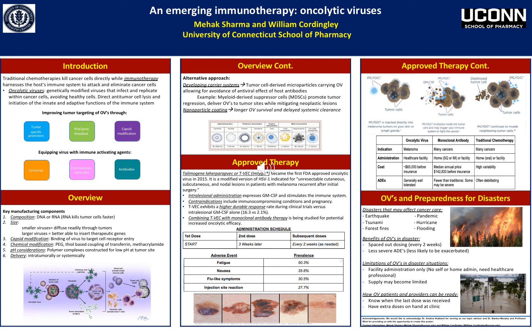Oncolytic viruses need to be administered in a healthcare facility by a trained professional, as they are only administered intralesionally. Both monoclonal antibodies and traditional chemotherapy can be taken at home, or more commonly in a facility if the drug might have infusion reactions, requires monitoring, or is IV only. Out of the three, monoclonal antibodies are actually the most expensive — the median annual price is $142,833 before insurance — while oncolytic virus therapy is only $65,000 before insurance. The cost of traditional chemotherapy has high variability. Out of the three, oncolytic viruses have the least severe adverse events and are generally well tolerated, while traditional chemotherapy is often debilitating.